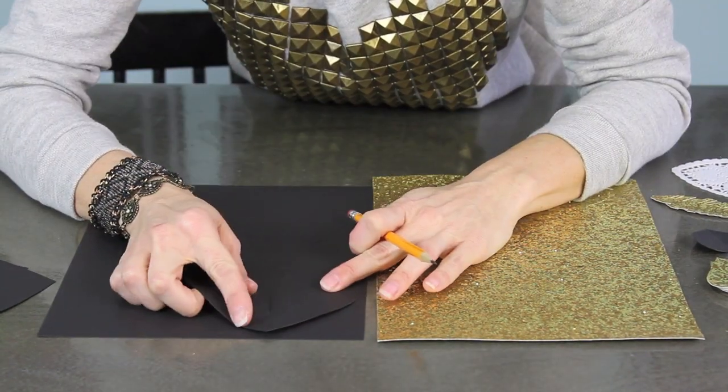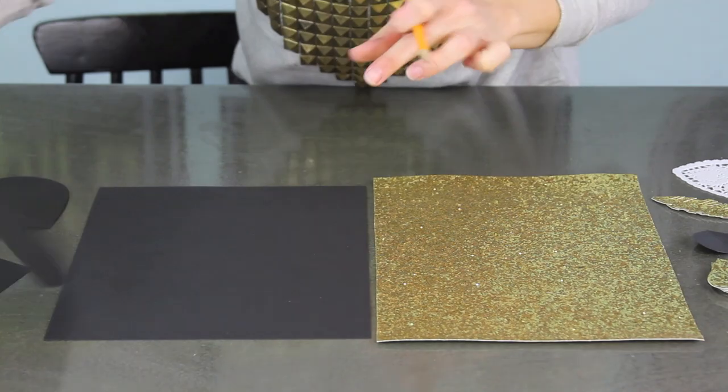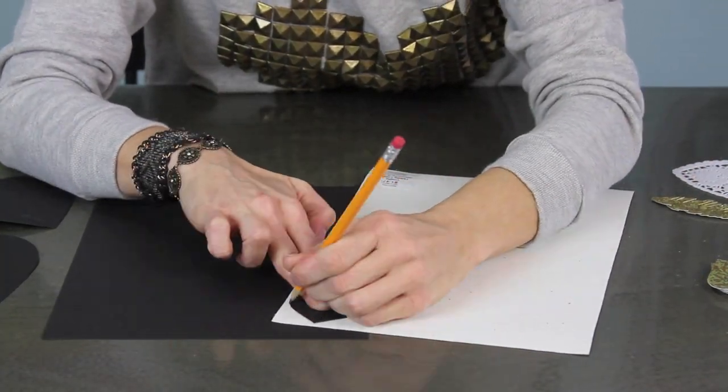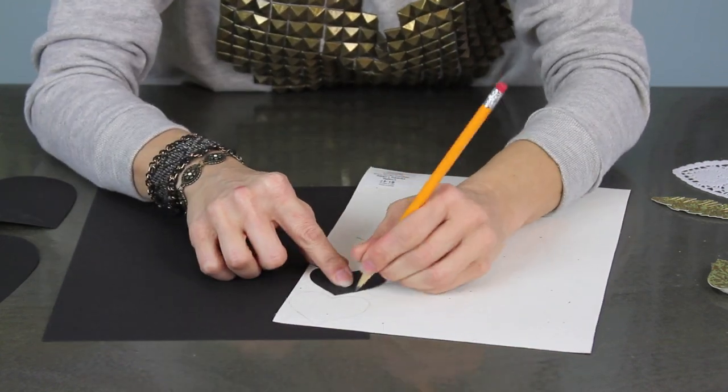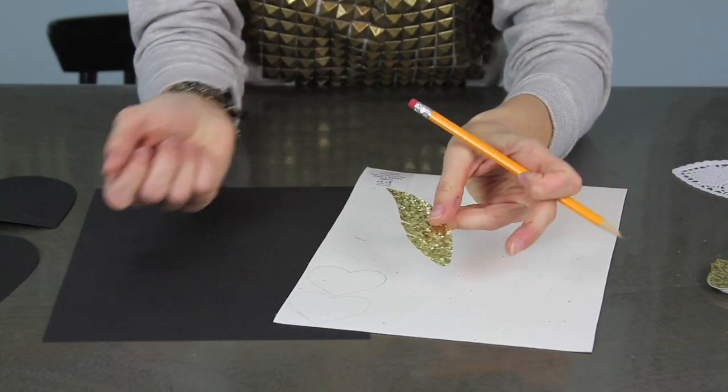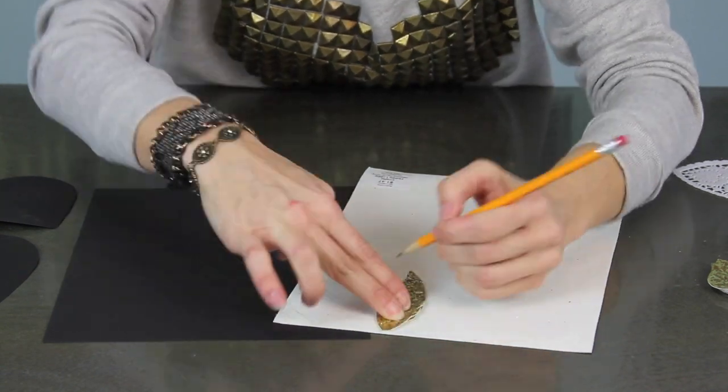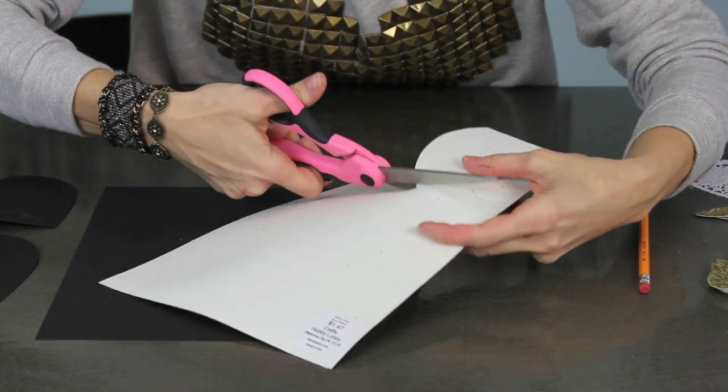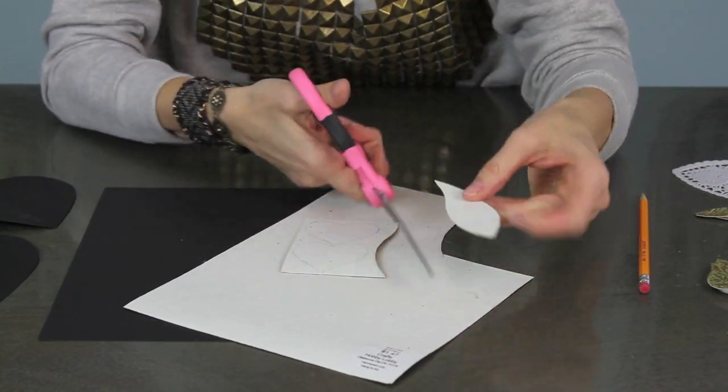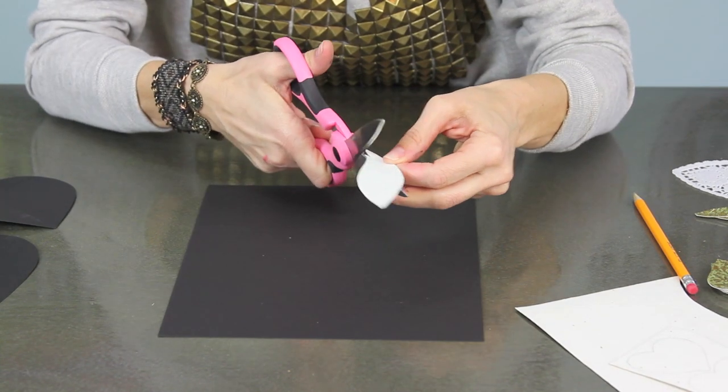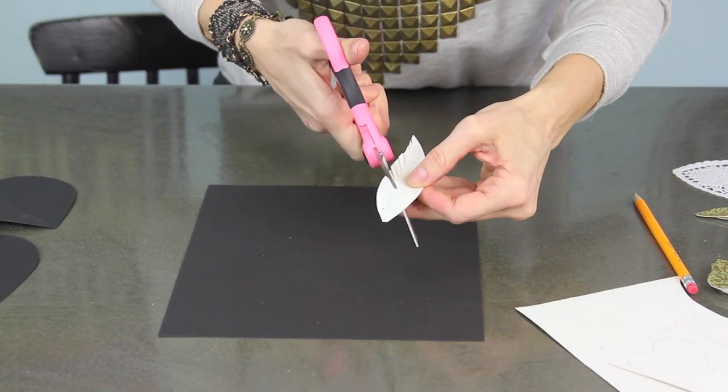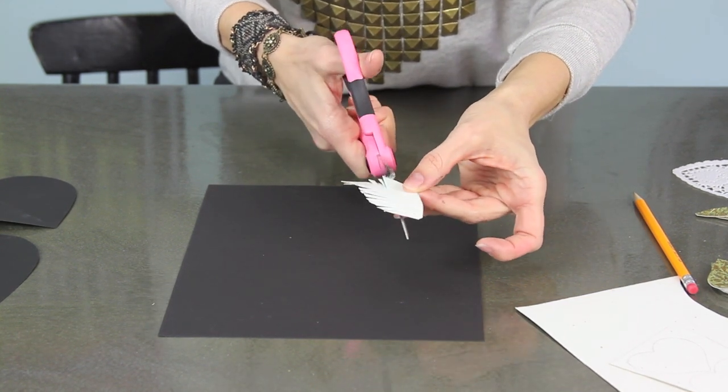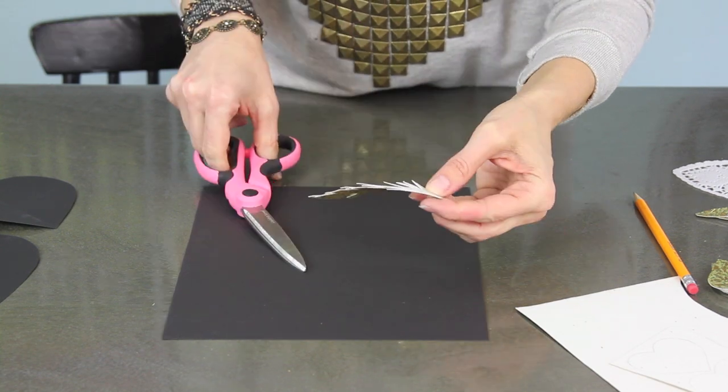Next you're gonna make a heart pattern. Just fold a piece of paper in half and draw a big heart and you're gonna need one big out of the black and then two smaller out of the gold glitter paper. And then you're gonna draw like an elongated leaf shape to make a glitter feather and then simply cut that out and then cut a whole bunch of little lines along your leaf shape and you will have a feather.